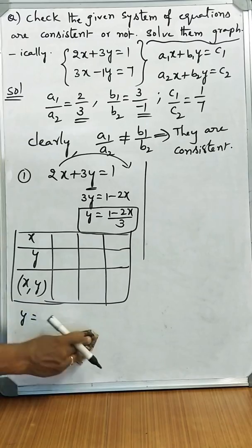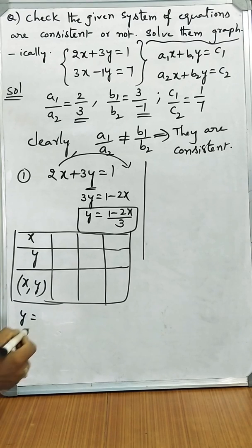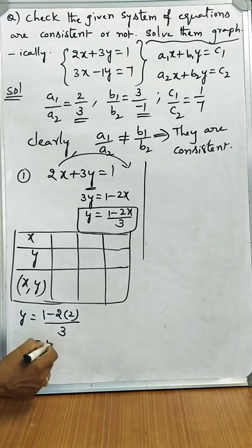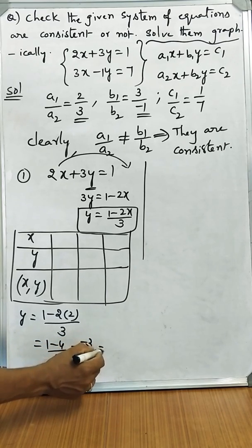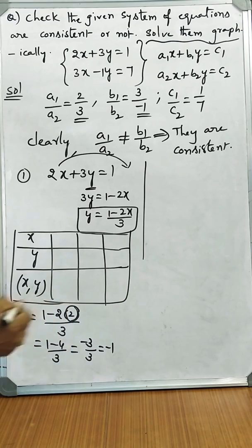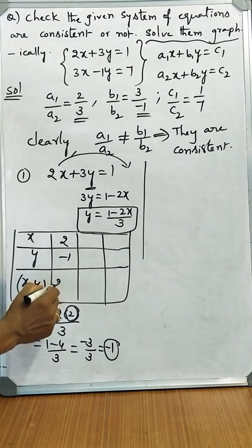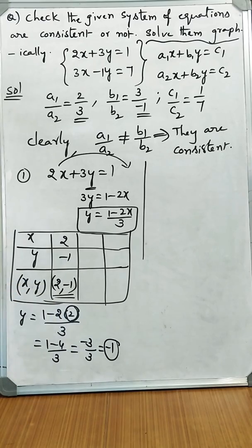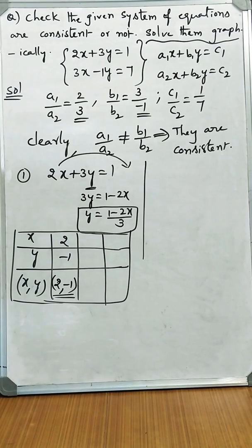Let us substitute x equals 2: y equals (1 minus 2 times 2) over 3, that is (1 minus 4) by 3, which equals minus 3 by 3, equal to minus 1. By substituting x equals 2, we get the corresponding y value minus 1. So the solution is (2, minus 1). These are integral values and can be plotted easily on the graph.